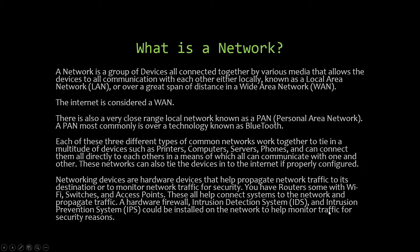What is a network? A network is a group of devices all connected together by various media, allowing them to communicate either locally — known as a Local Area Network or LAN — or over a great distance in a Wide Area Network or WAN. The internet is considered a WAN, a very massive wide area network that spans the entire world.